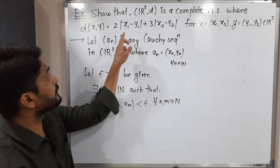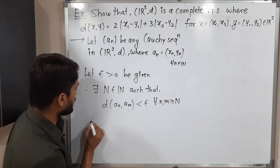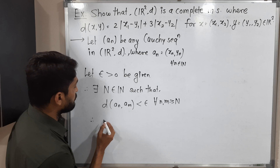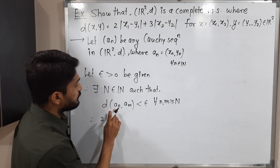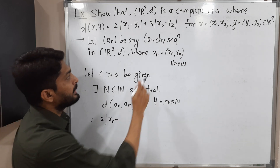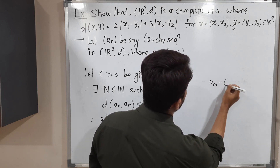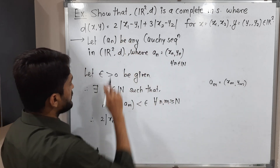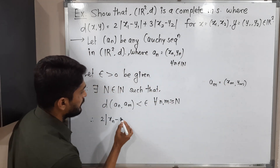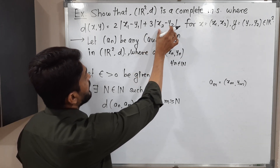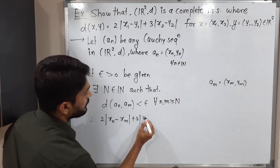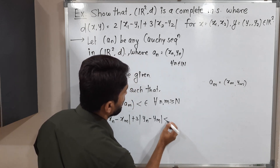Now it's time to use the definition of D. Using this definition, D(Nₙ, Nₘ) expands as: 2|xₙ - xₘ| + 3|yₙ - yₘ| < ε, for all n, m ≥ N. Here Nₘ = (xₘ, yₘ) for reference, so the definition gives 2 times the absolute value of first component minus first component plus 3 times the absolute value of second component minus second component.